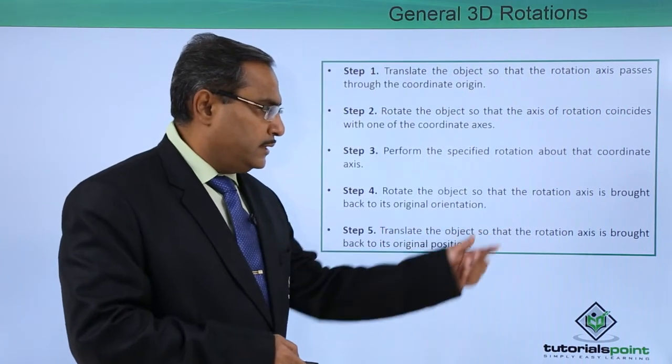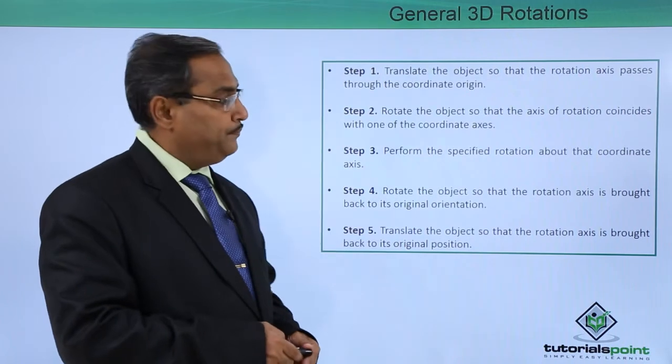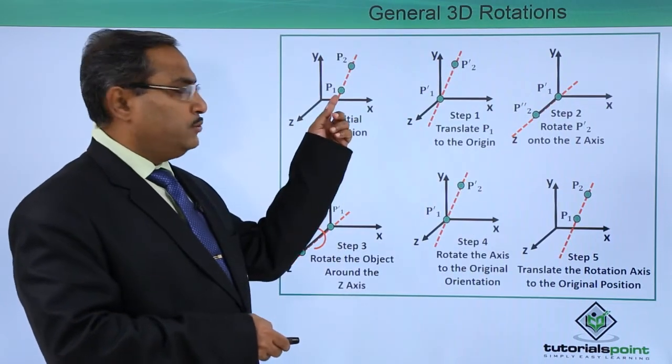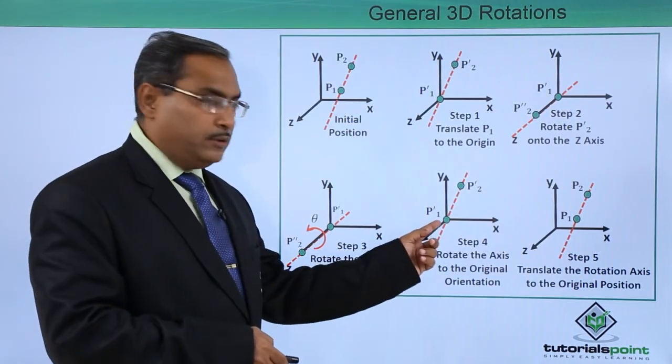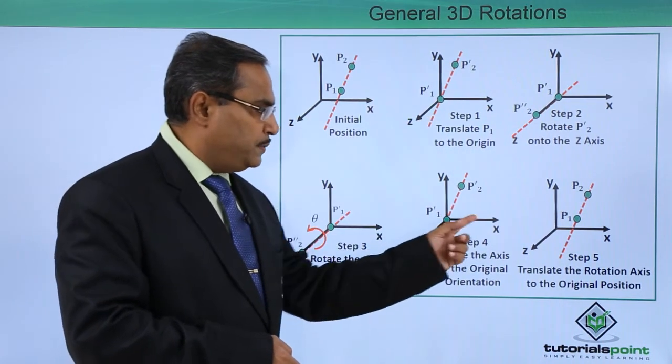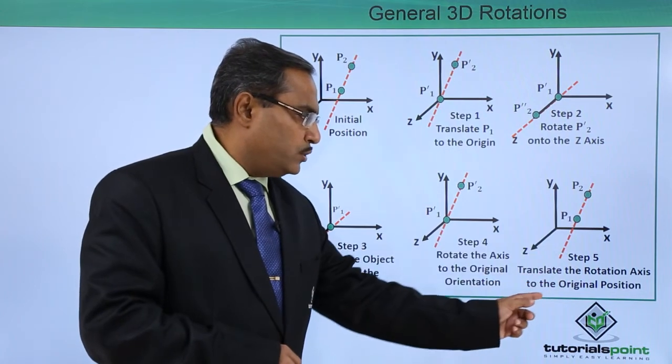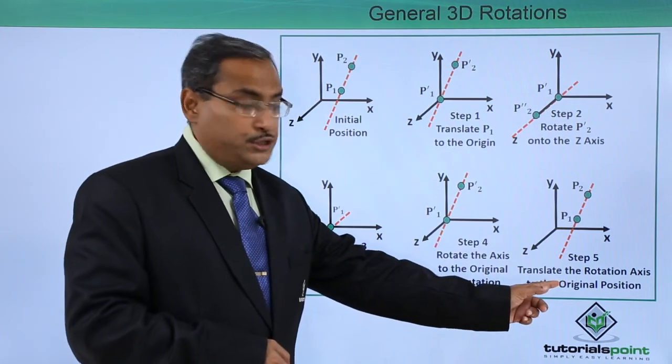Translate the object so that the rotation axis is brought back to its original position. Here we started with this p1 and this particular p1 dash, we had this p1 dash here. Now this p1 dash will be translated to this p1 position. Translate the rotation axis to the original position.